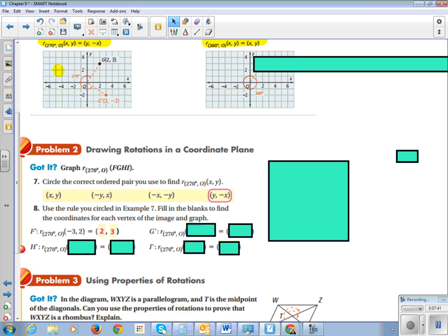For point G, I take my original coordinate, negative 3, negative 1, and I switch the 2, and I change the sign of the second one. So then it's negative 1, positive 3.